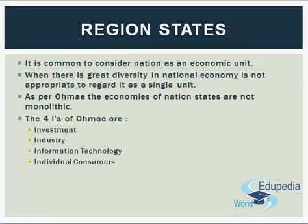Finally, individual consumers have also become more global in orientation. With better information about lifestyles around the globe, they are much less conditioned by government injunctions to buy from any particular source merely because of national associations. Consumers increasingly want the best and cheapest products no matter where they come from. Omae suggests that taken together, the mobility of these four I's makes it possible for viable economic units in any part of the world to pull in whatever is needed for development — they can use resources from anywhere around the globe.